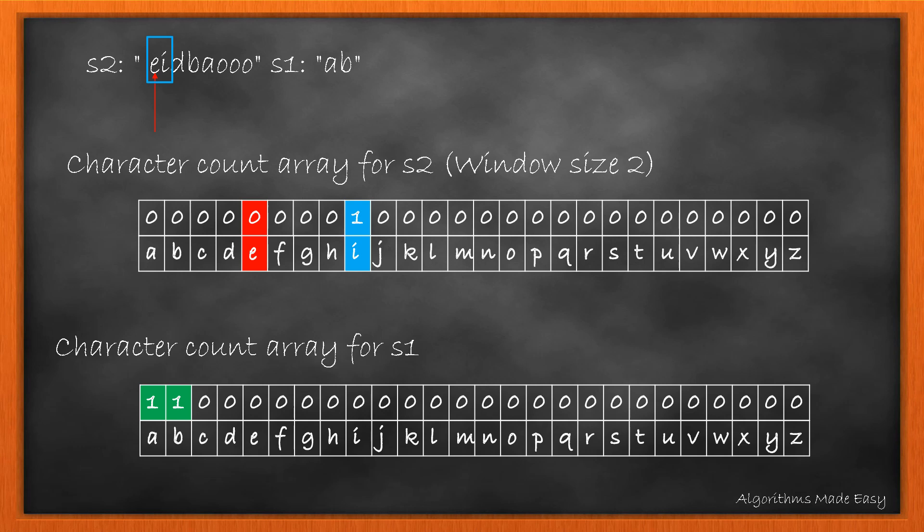We will remove the count of start character by decrementing its value in the array and move forward. We have our next window. For this we again increment the count of character at current index and compare the updated array with the array of S1.